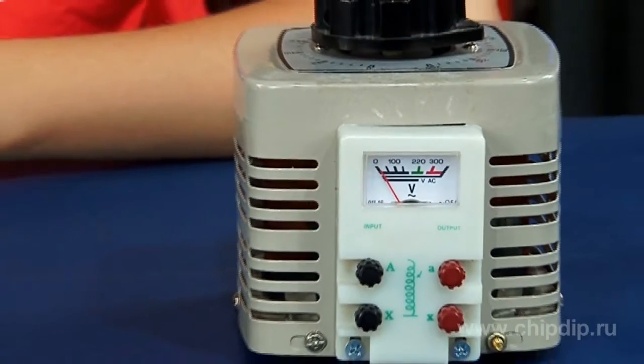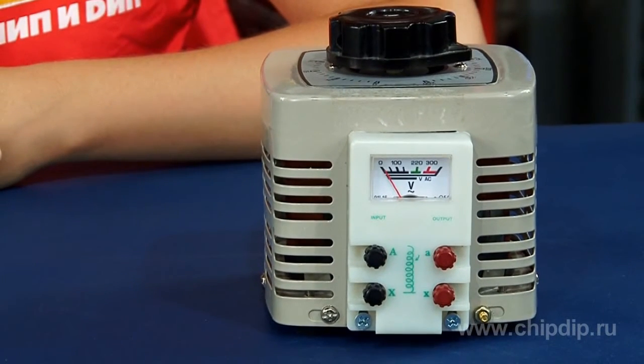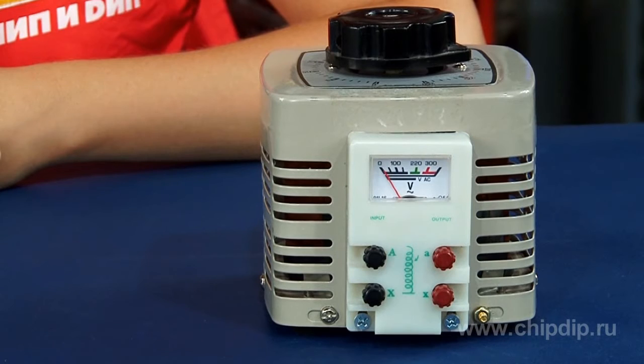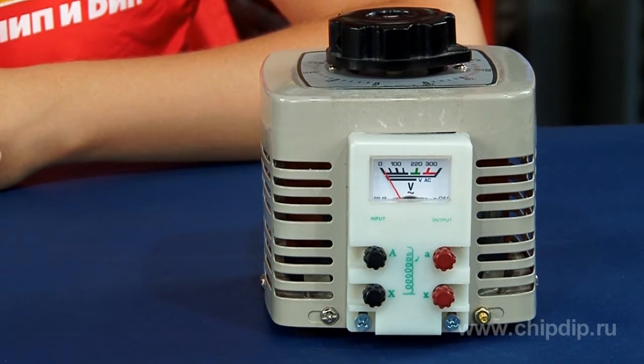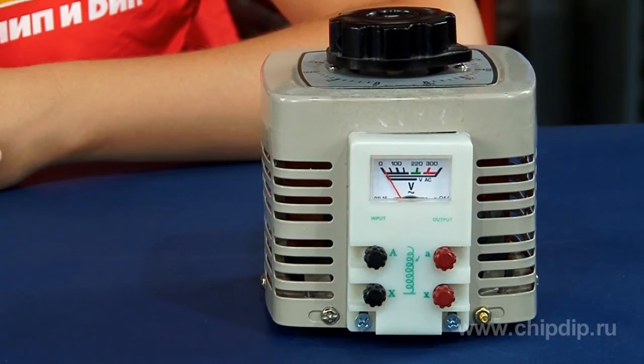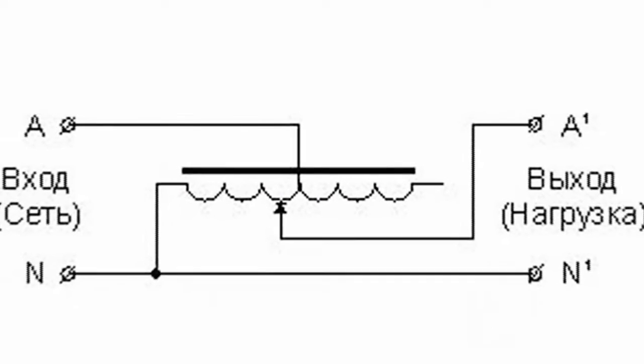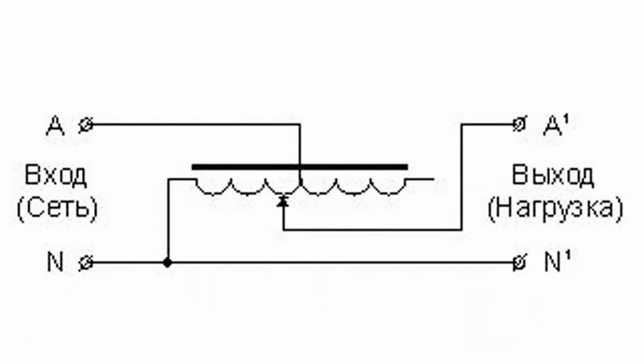The TDJC2O5B single-phase autotransformer is based on a toroid magnetic circuit with coiled copper winding. It has an exposed, non-insulated track providing electrical load contact with the winding via a sliding carbon-baked brush. The brush assembly has two independent spring-actuated carbon contacts. High-capacity models have several interconnected magnetic circuits with brush assemblies mounted on a common axis.